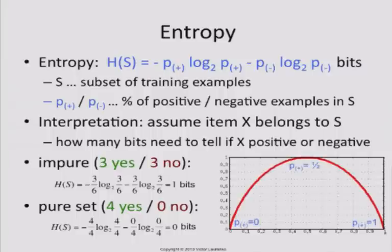In general, this is what entropy looks like as a graph. If you are totally certain it's positive — P+ equals one — you need zero bits. If you're totally certain it's negative, you also need zero bits. If you're totally uncertain, half and half, you need exactly one bit. And if you're somewhere in between, say two-thirds certain that it's one or the other, you need a little bit less than one bit. This graph is symmetric about 0.5, which is what I meant when I said the metric must be symmetric.